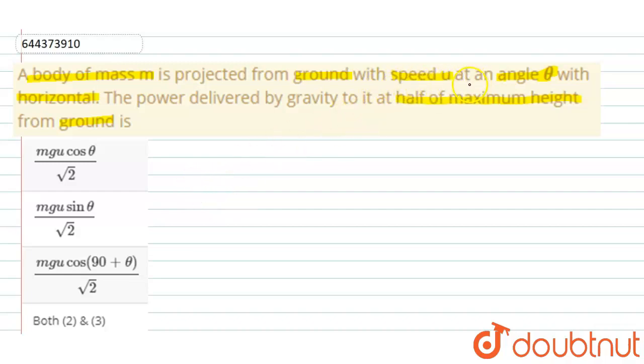So the maximum height will be H = u² sin² θ / 2g.